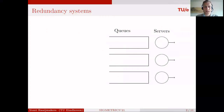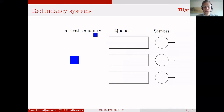Consider parallel server systems. Here you can see three servers, each with their own queue. Upon arrival, the question is to which server we should send this job. This question is studied in a lot of papers and there are policies such as join the shortest workload or join the shortest queue.